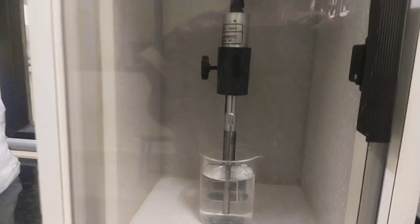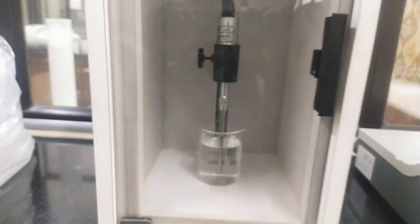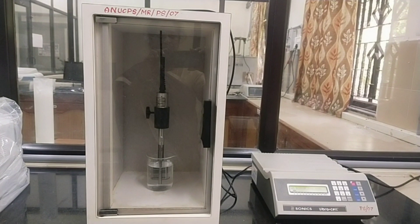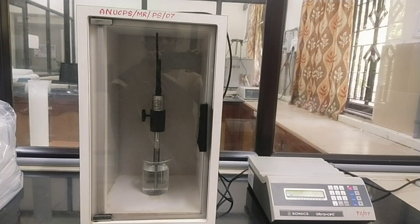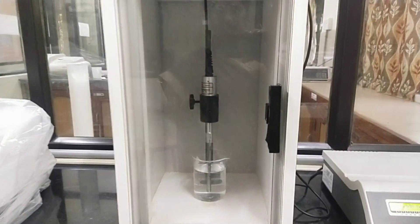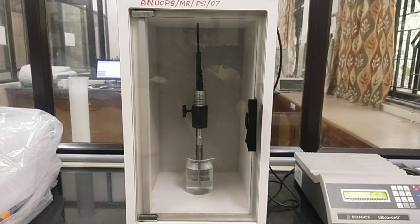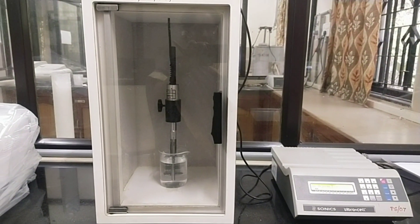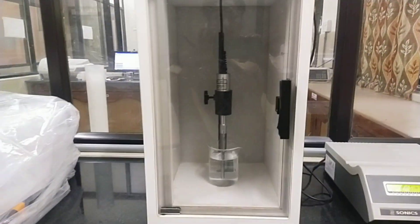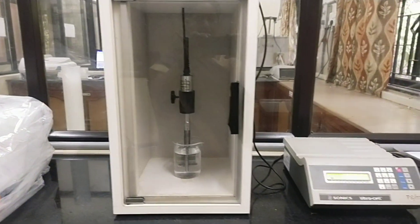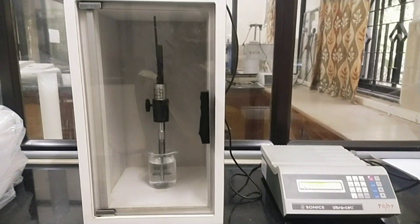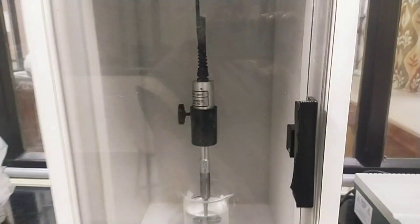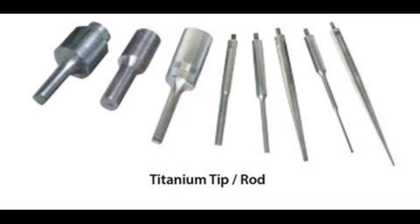The energy is transmitted from the probe to the sample, which causes the disruption of the sample and makes it easy to break down the particles into smaller sizes. During the process, do not open the door, as ultrasonic vibrations are above the human audible range. After completing the experiment, switch off the instrument. These are the probe tips available in different diameters.